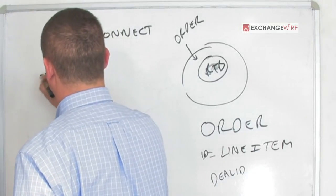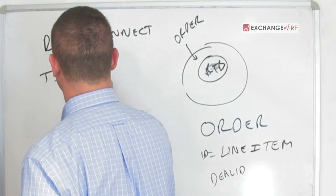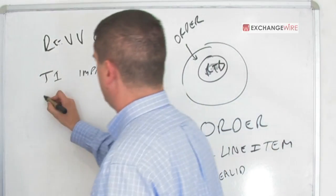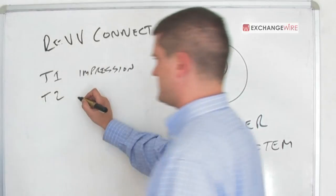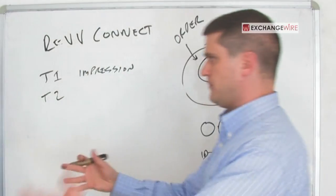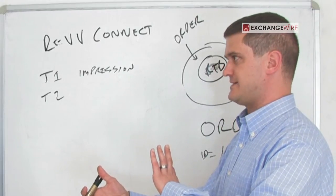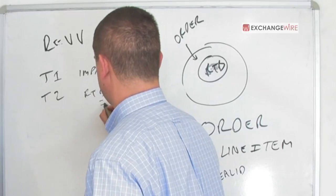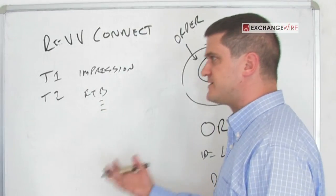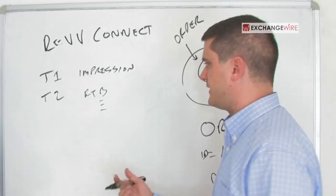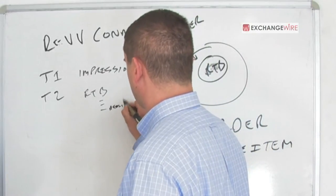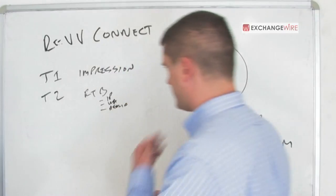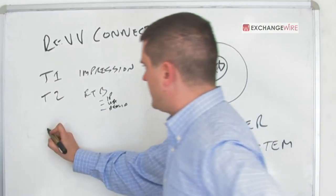So at time one, the impression comes in. The impression comes into the exchange. At time two, the impression is essentially marked up. It's decomposed from being this HTTP request into an RTB request. And along with that is additional markup. Country, the site, the placement, if it's provided, and the deal ID. You've got IP of the user, user agent, user identifier, etc. Then at time three, this is essentially exposed to the buy side. Exposed to bidding.